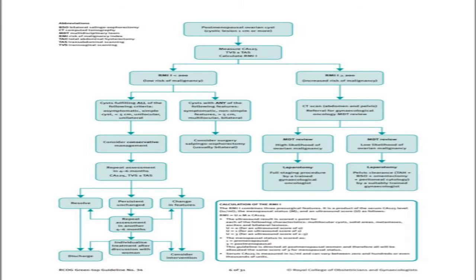From the start, if the cyst is more than five centimeters, symptomatic, bilateral, multilocular, or has solid areas, surgery should be performed in the form of bilateral salpingo-oophorectomy.